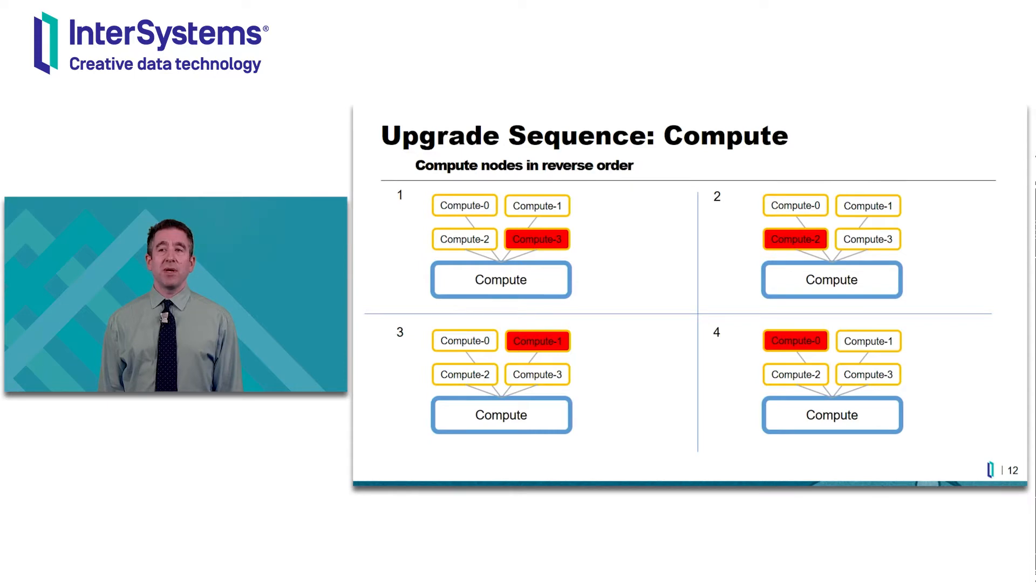The same logic is followed if we update the compute nodes. They're updated in reverse order, in this case starting with pod compute 3 and ending with pod compute 0.